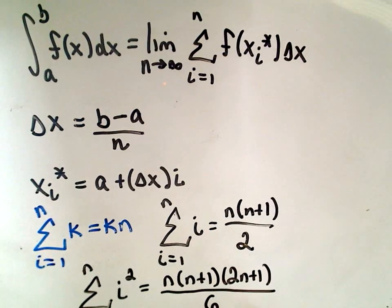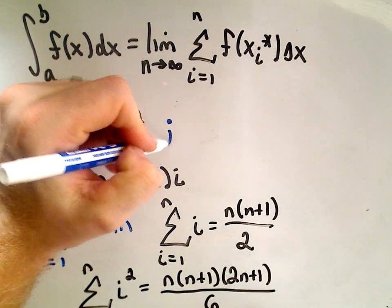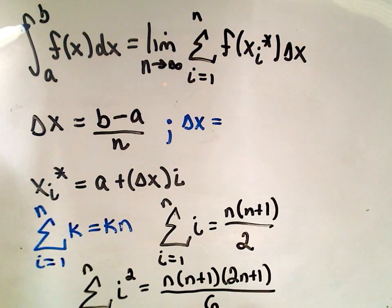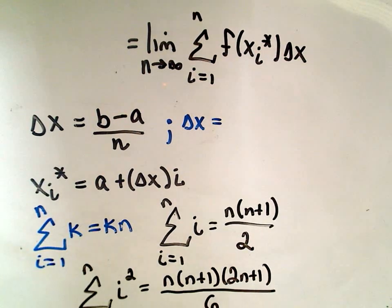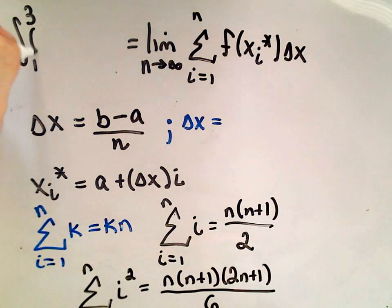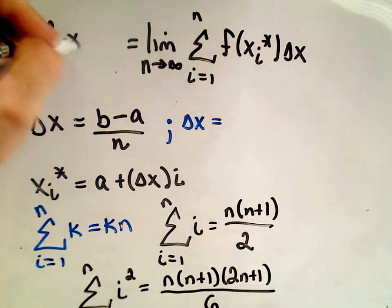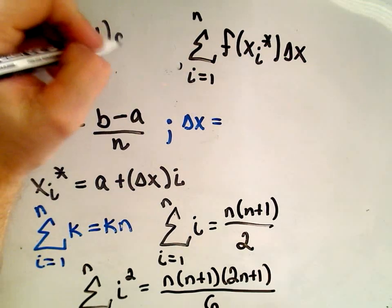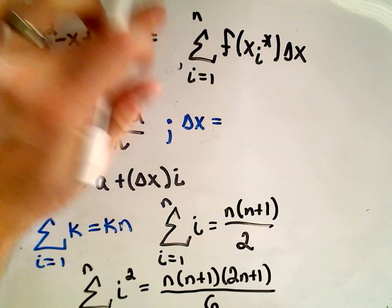So when I go to calculate this stuff, the delta x value for this particular problem. Again, b is the upper limit of integration. Let's write down the original problem that we had a second ago that we were trying to calculate. We want to calculate the value from 1 to 3 of x squared minus x plus 1 dx.